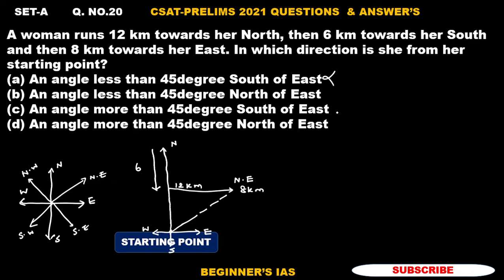Therefore we can eliminate the options — A eliminated, C eliminated. Now we have to be more careful: is the angle less than 45 degrees or more than 45 degrees? So understand one logic: this angle is less than 45 degrees, and this angle is greater than 45 degrees. Be careful with this.